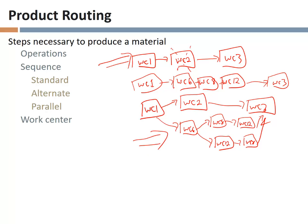The product routing lists the operations in sequence — do this first, then this, then this. It tells us what work center each operation is done in and gives us times divided into three categories: setup time, machine time, and human labor time. For example, human beings might come in and set up equipment, taking 20 minutes. Once done, they push a button and can go work on something else while the machine works for another hour, after which items come out of the equipment and move to another work center to continue the process.